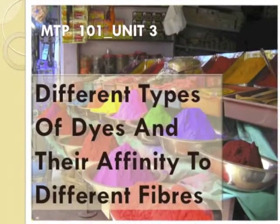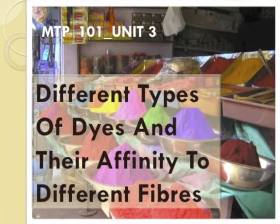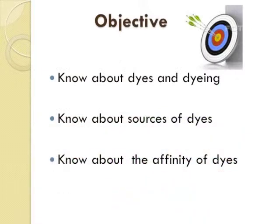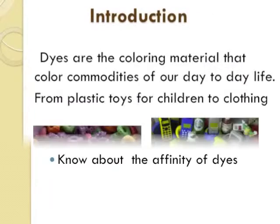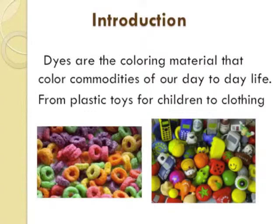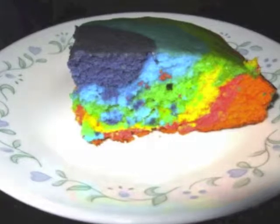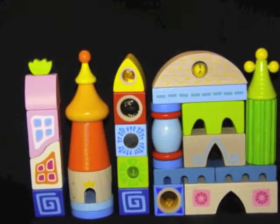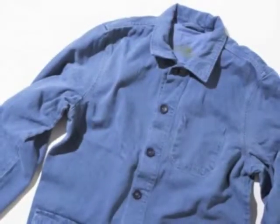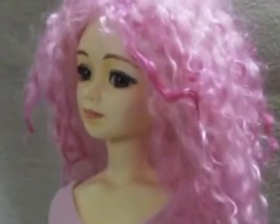Today we are going to study about different types of dyes and their affinity to different fibers. Objectives: after going through this lesson, you will need to be able to know about dyes and dyeing, know about sources of dyes, and know about the affinity of dyes. Introduction: dyes are the coloring material that color commodities of our day-to-day use. Hardly there is any industry where dyes are not used — from plastic toys to clothes we wear with attractive colors, everywhere there is an application of dyes. This unit tries to give complete knowledge about dyes, their sources, and the various types that are used.